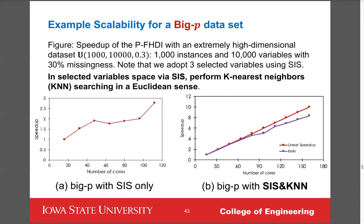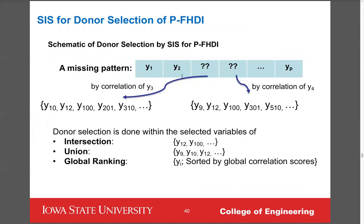Follow-up clarification: For each missing cell, SIS finds maybe five related variables. If a pattern involves multiple missing cells, you use intersection, union, or global ranking to define the neighbor. This must be done for each different missing pattern, which is a lot of computation. Yes, that is the key point — the idea is simple but computationally very expensive. That is the motivation for the parallel approach.